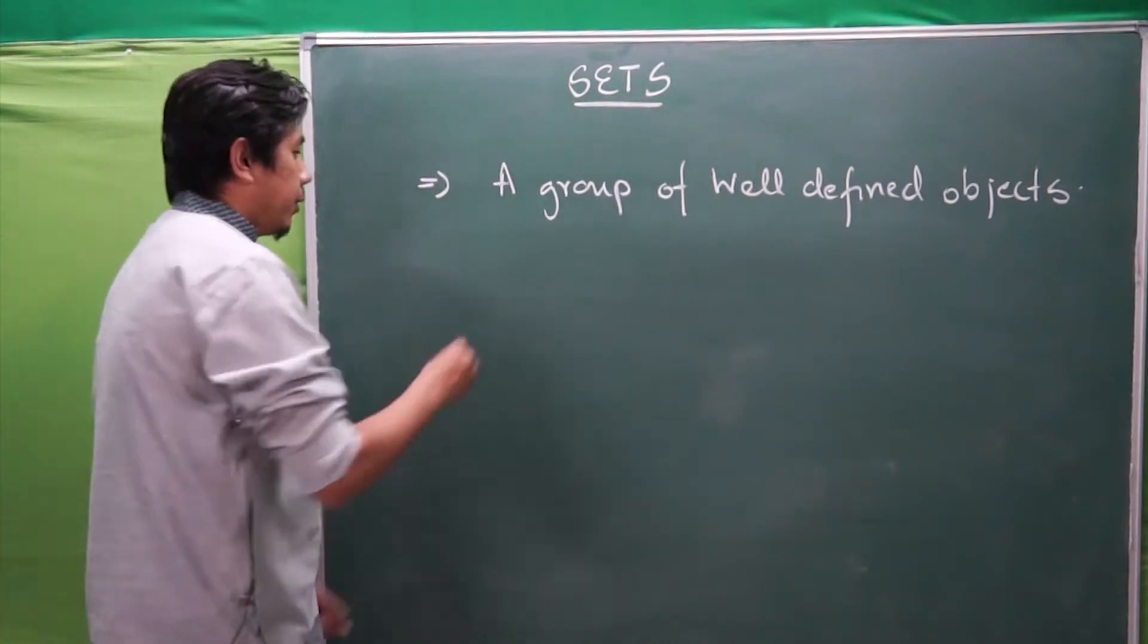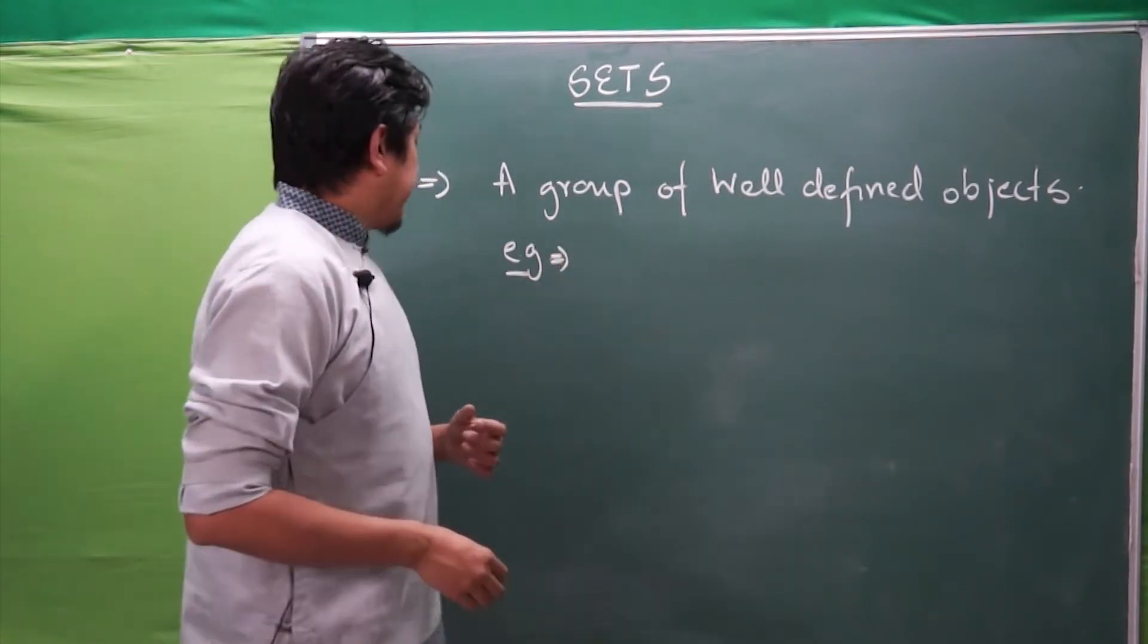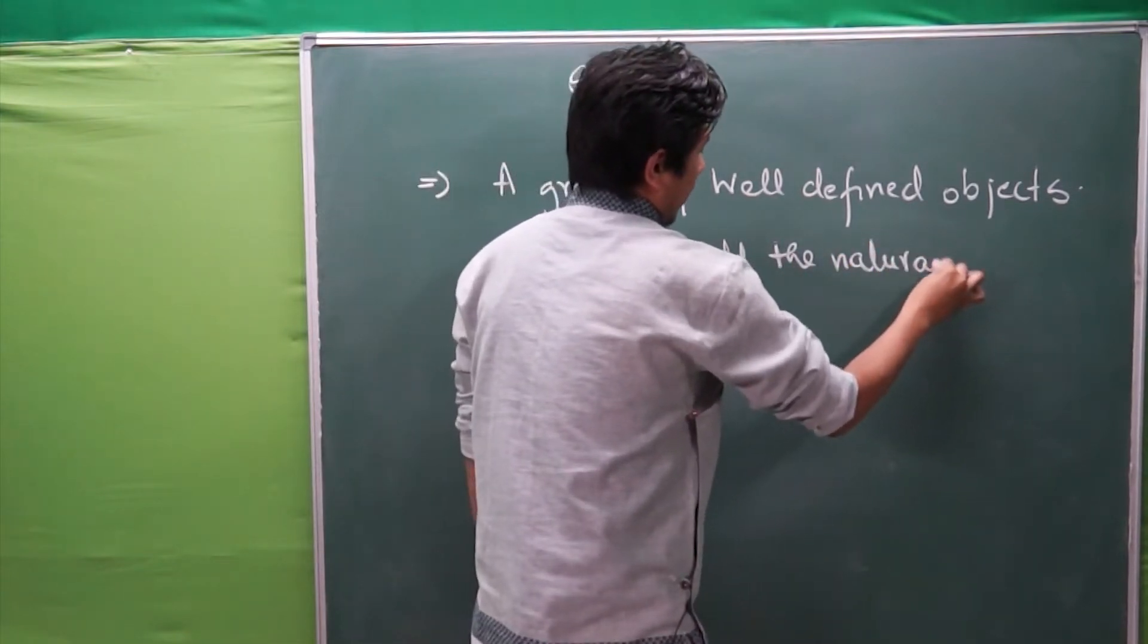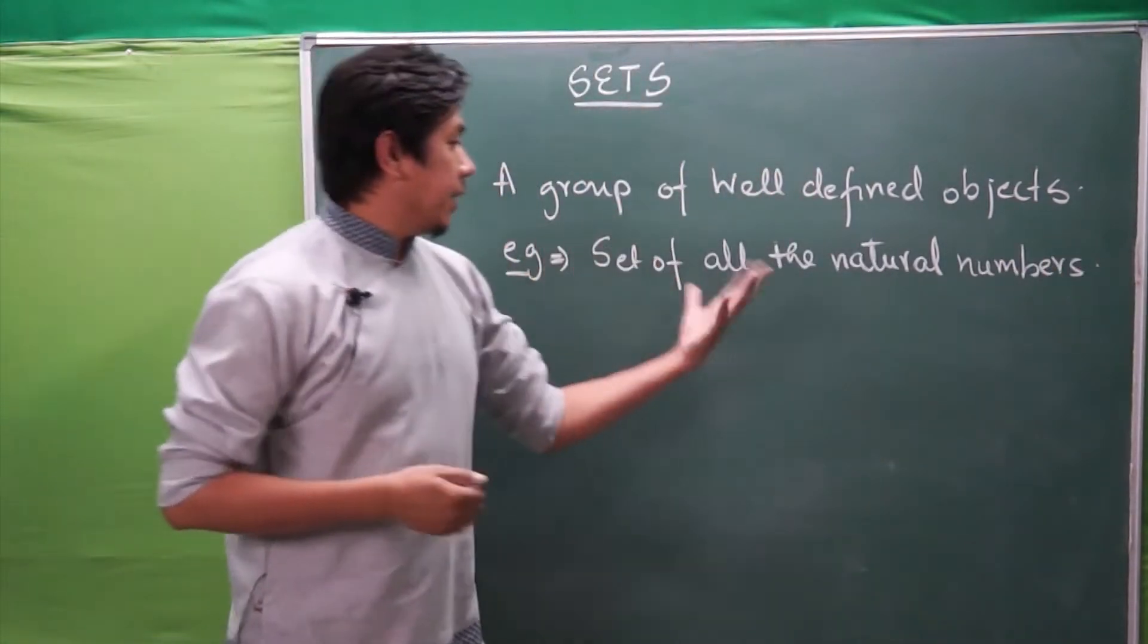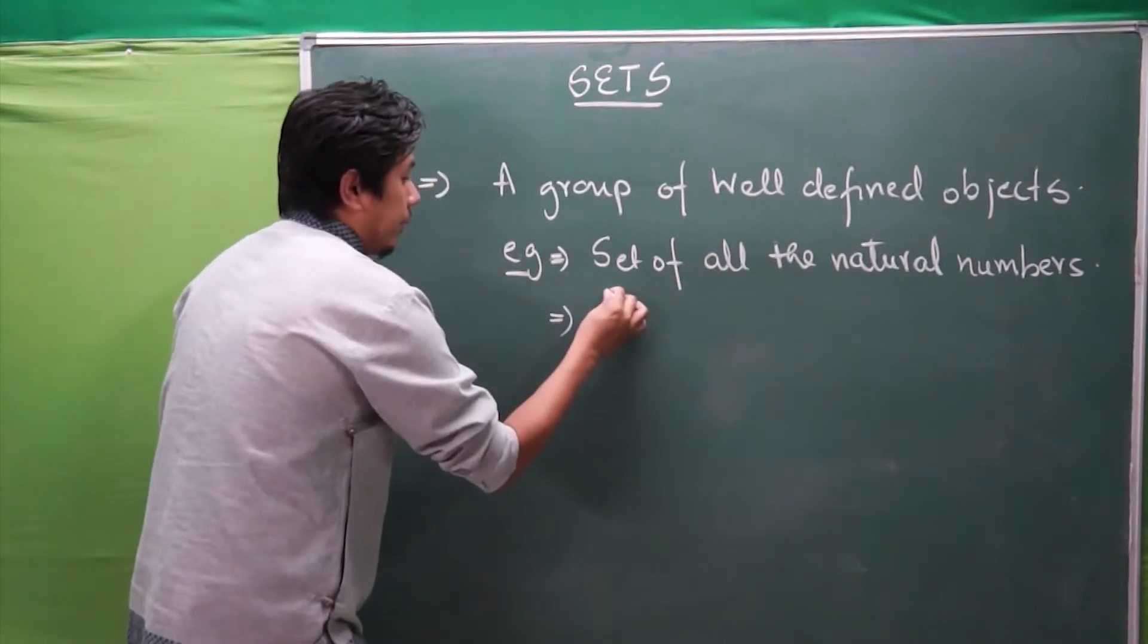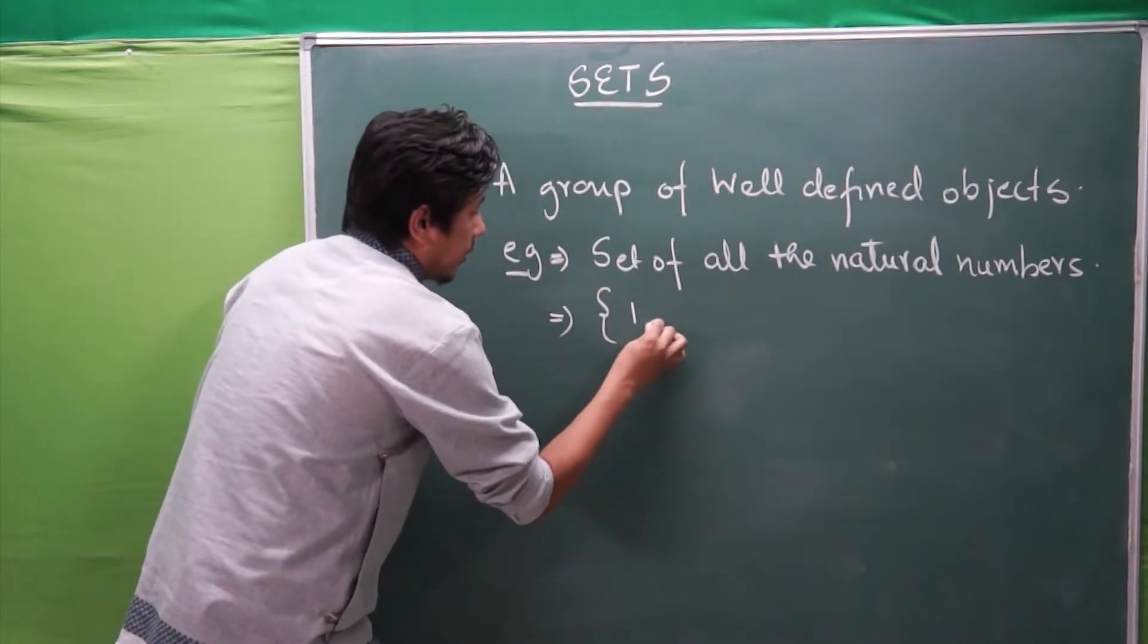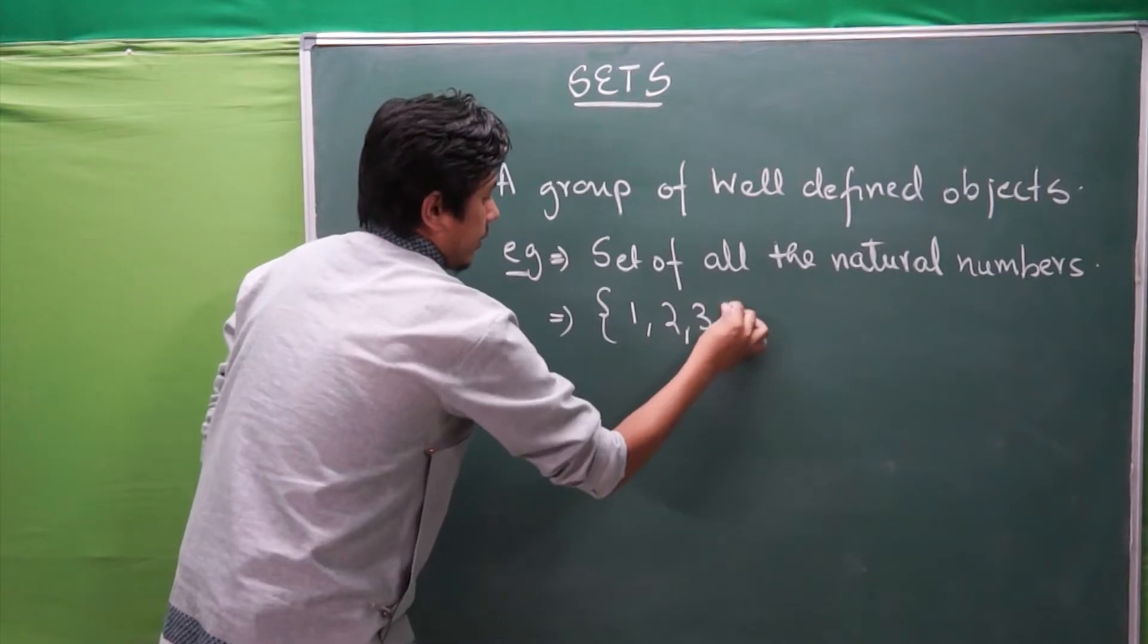By the definition or the statement of sets we can clearly understand what a set is. To further clear it, we take an example. We have a set of all the natural numbers. This is represented in statement form. What about mathematically? To mathematically represent this statement, I will be using parenthesis, which is usually how set is also represented. It is always represented in parenthesis or you can say braces.